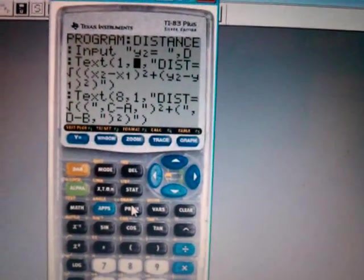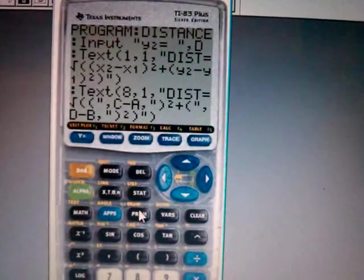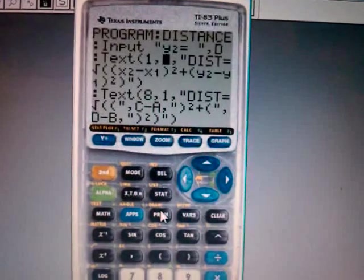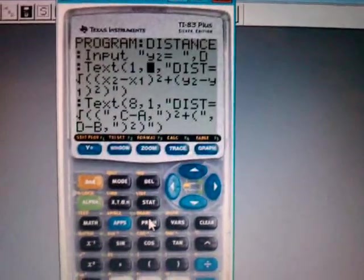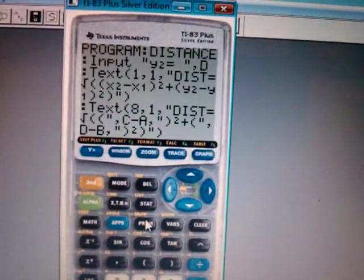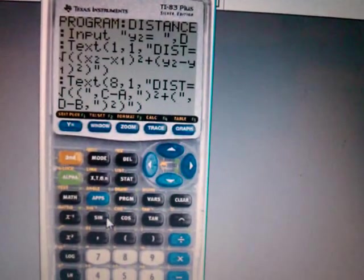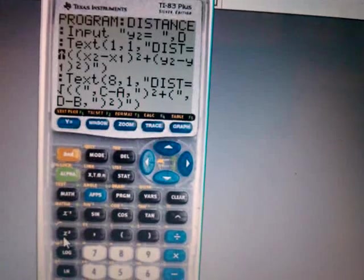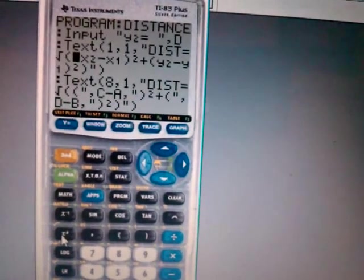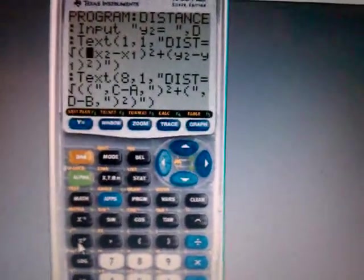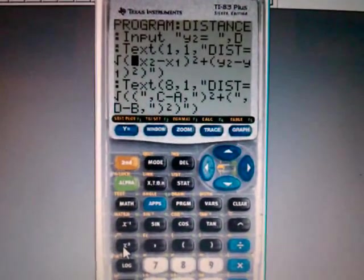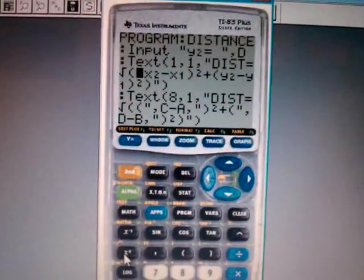The rest of the stuff I just displayed the distance formula. I wrote out 'Dist' because it won't fit on the screen as 'Distance,' and then I put in my square root symbol. If you don't know where square root is, square root is just second x squared—that's your square root. It has to be exactly in this format. If you miss a space, it will not work.